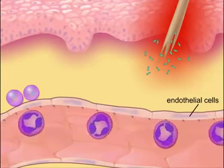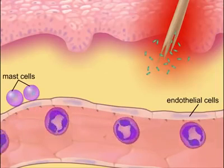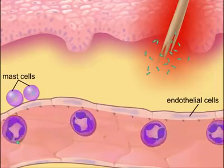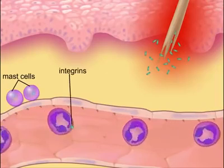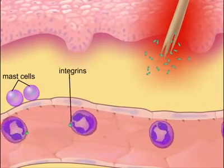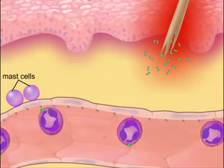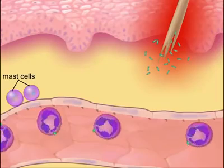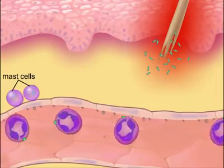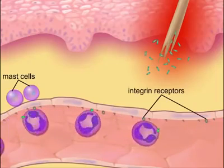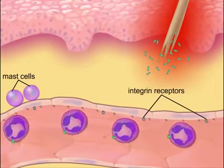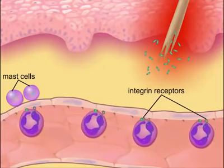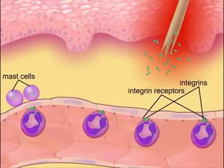As the neutrophils roll along the endothelium, they encounter chemicals that activate integrins, which are adhesion receptors on their surfaces. These integrins then tightly attach to adhesion receptor molecules on the endothelial cells, causing the neutrophils to stick to the endothelium and stop rolling.